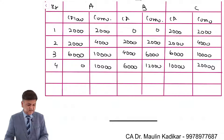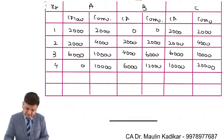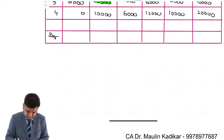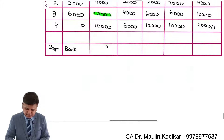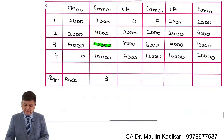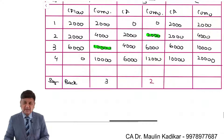The question requires us to compute the payback period. Project A has an investment of 10,000 which is recovered by the end of 3 years, so the payback period for Project A is 3 years. For Project B, the investment is only 2,000, which is recovered by end of year 2, so the payback period is 2 years.